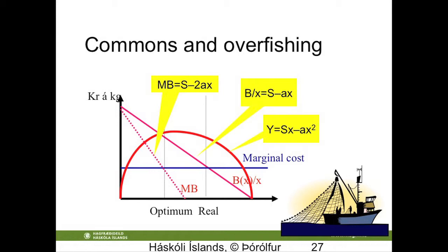If you expand effort beyond that, then you overfish and the sustainable catch diminishes. Until at some point you fish out the last piece. We almost did that with a stock of 10 million tons in 1968-1969. That was the biggest fishing stock in the Atlantic - the Atlantic herring. And we almost managed to kill the last one. So it is possible.